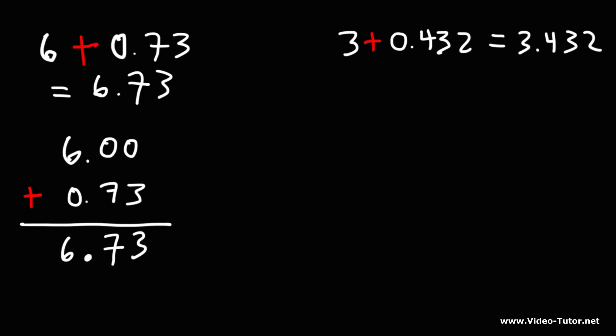For the second problem, we can do the same thing. 3 is the same as 3.000. And then 0.432, we can write that right below it. And always make sure when you're adding or subtracting decimals that the decimal point is lined up.